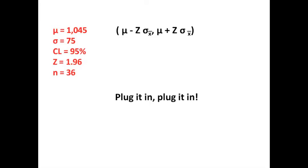Now we will put the formula in place and proceed further to identify those things that we need to know. We need to know Mu, we need to know Z, and we need to know Sigma of X bar. We know that Mu is 1,045, Sigma is 75, our confidence level is 95%, and our Z that would work for this is 1.96 which we would obtain from the table. We know that n is 36. Now note that you do not have Sigma of X bar. Sigma of X bar is equal to Sigma divided by the square root of 36.